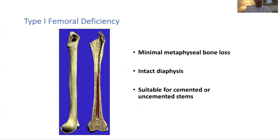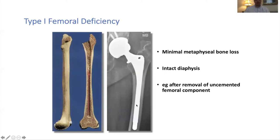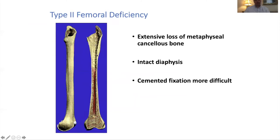For type 1 femoral deficiency there's minimal bone loss — you can do a cemented or uncemented stem and it's straightforward. For example, a hemiarthroplasty without fixation that's removed but with intact lesser trochanter and diaphysis. In type 2, there's more extensive metaphyseal loss but still an intact diaphysis. Sometimes this means you'll have to do impaction grafting to restore bone stock, though cement remains a good option. For a younger patient, you would consider impaction grafting.